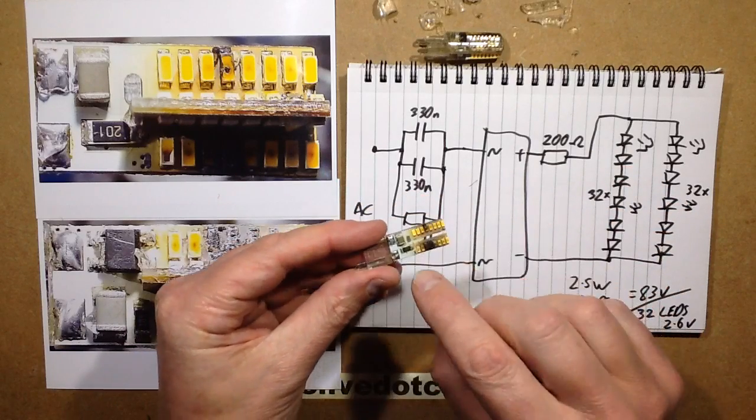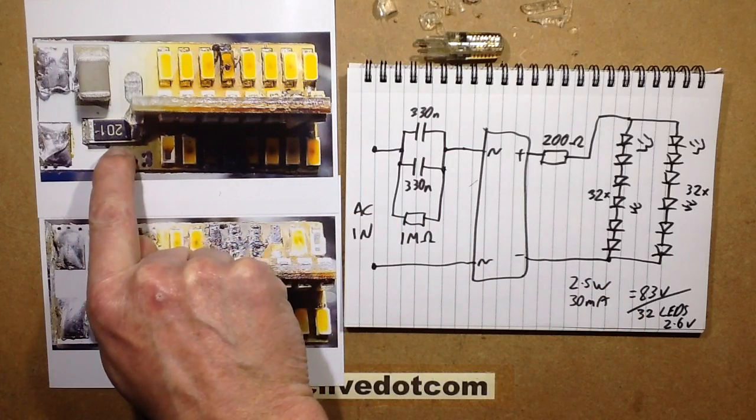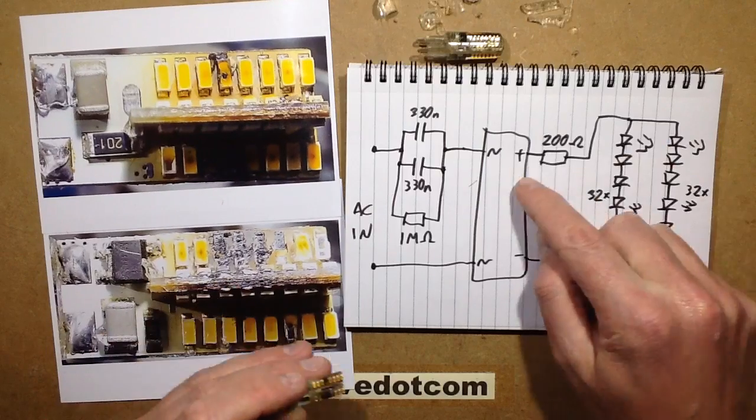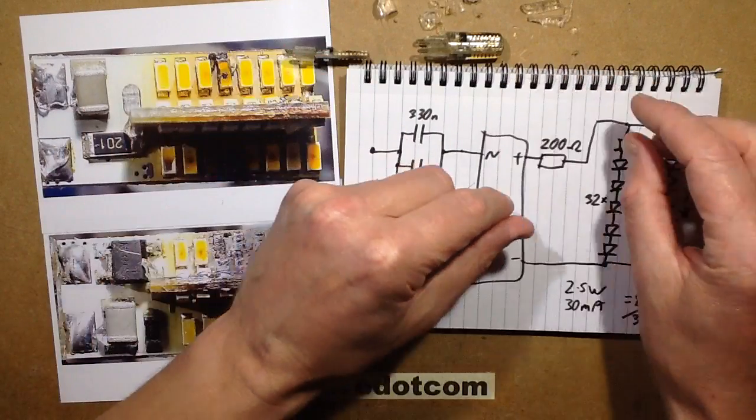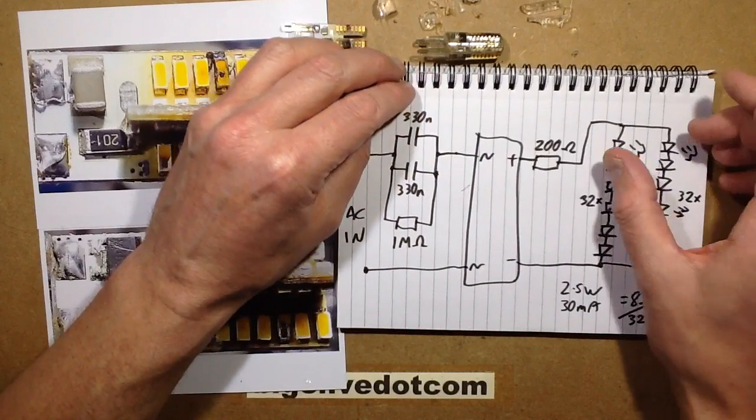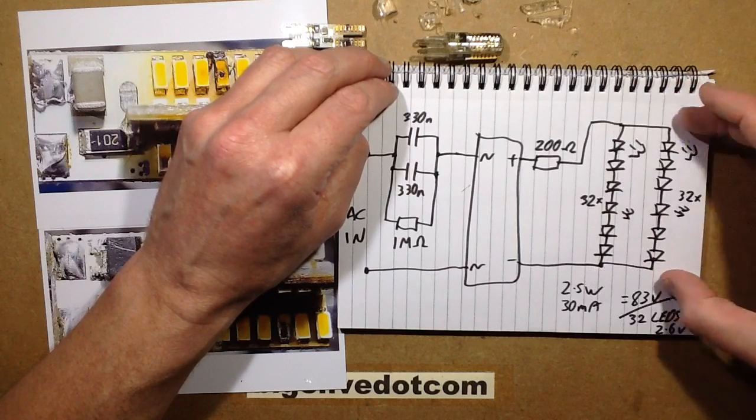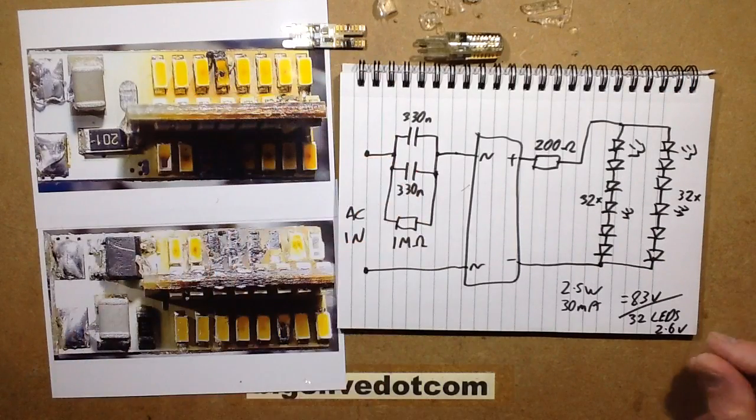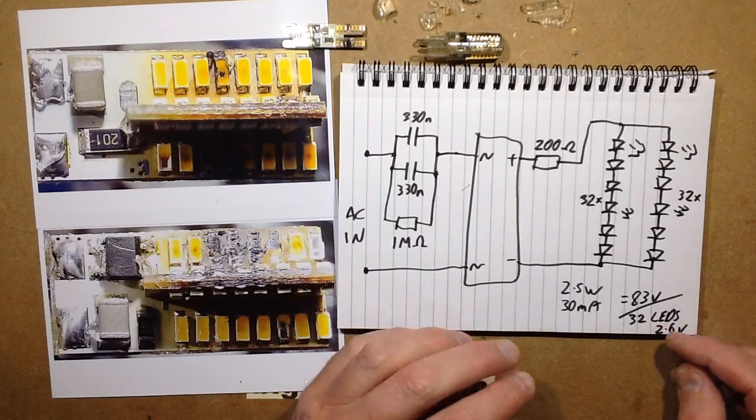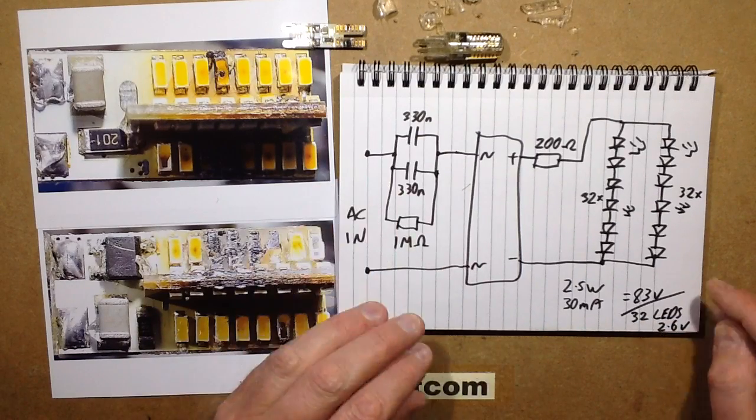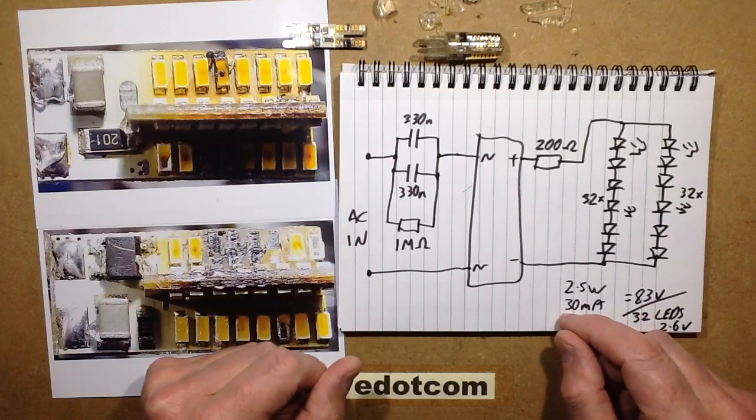Fundamentally after that, all there is is this 200 ohm resistor, which is then in series with what I've worked out to be two sets of 32 LEDs in parallel, 32 in series but then the two sets in parallel. If you do the math, 2.5 watts divided by 30 milliamps is about 83 volts, divided by 32 LEDs, it works out about 2.6 volts across each LED, which is pretty close to what you'd expect for white LEDs.